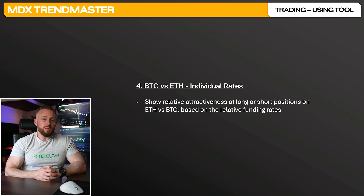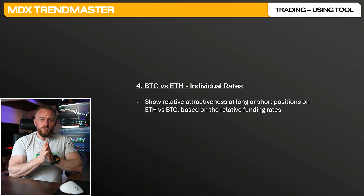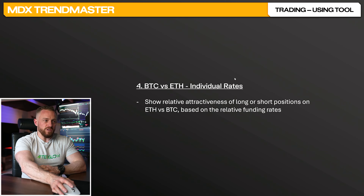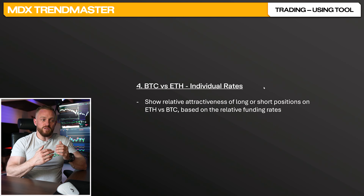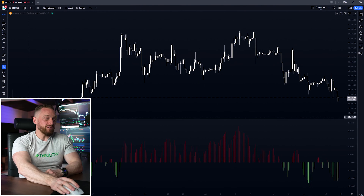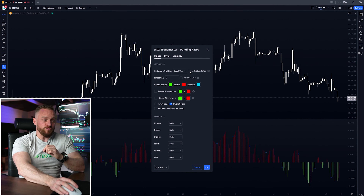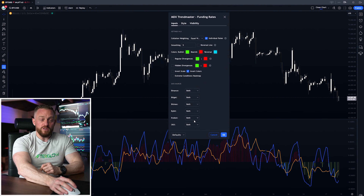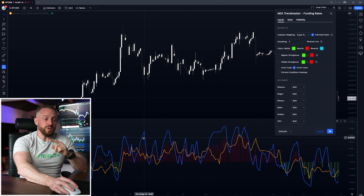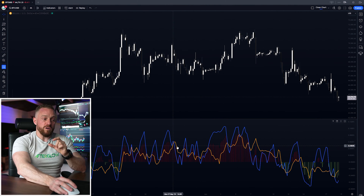For advanced traders who like to trade Bitcoin versus Ethereum, strategy number four is looking for discrepancies between Bitcoin and Ethereum using the individual rates feature, which shows the relative attractiveness of long and short positions on those two coins based on the relative funding rates. Head back into the menu options and select individual rates — if you set your data sources to both, it will plot the funding rates for Ethereum in blue and Bitcoin in orange side by side on the chart.